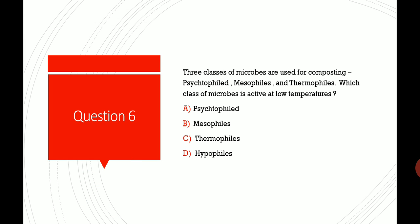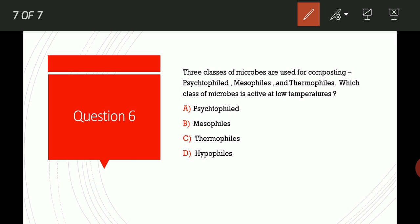Coming to the next question, Question 6, the last question. Three classes of microbes are used for composting. Today we are getting questions related to composting or three R's or related to nature. The three classes of microbes are used for composting: Number 1, Psychrophiles; Number 2, Mesophiles; and Number 3, Thermophiles.